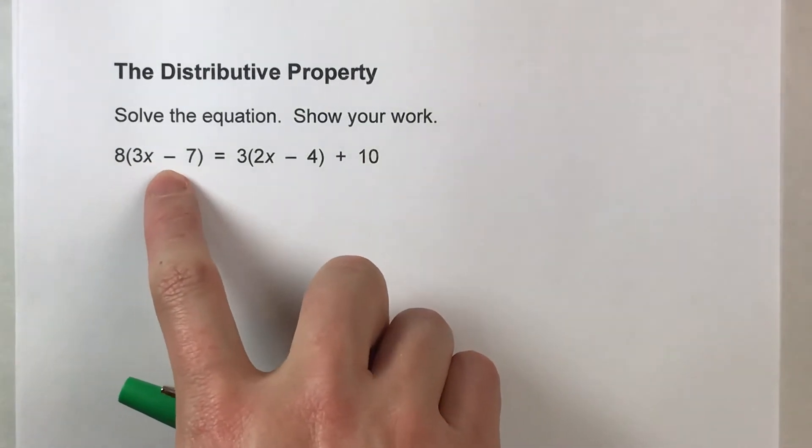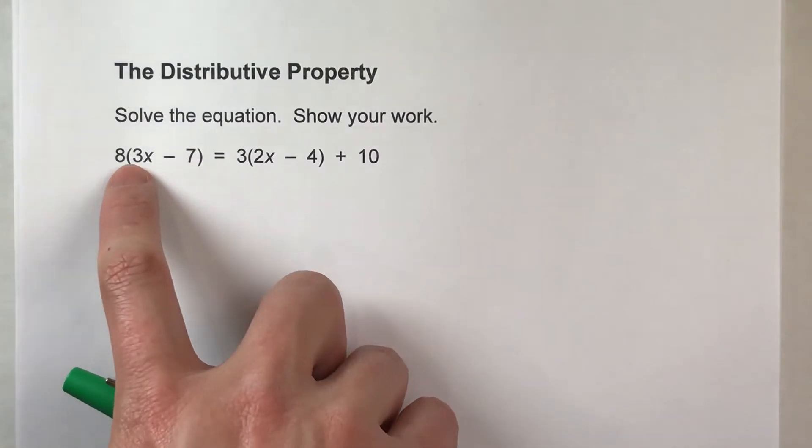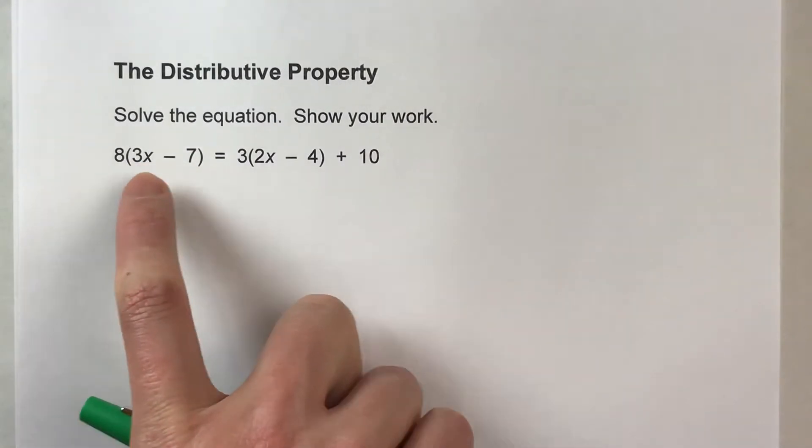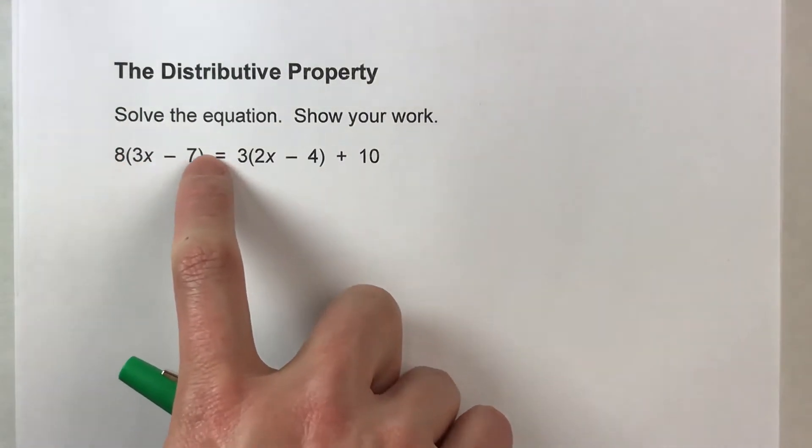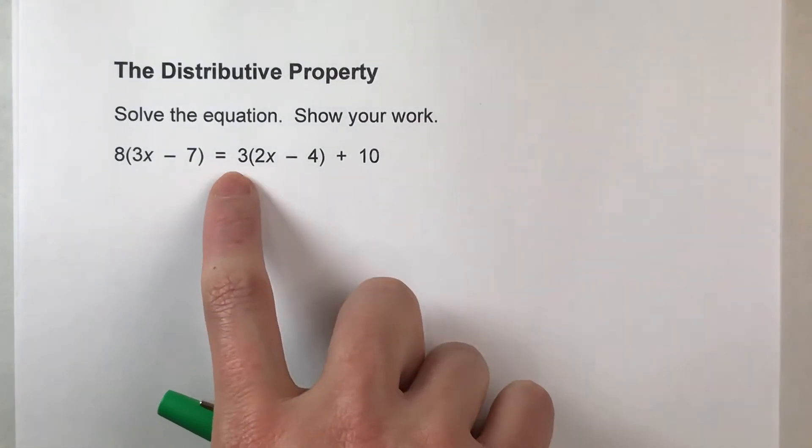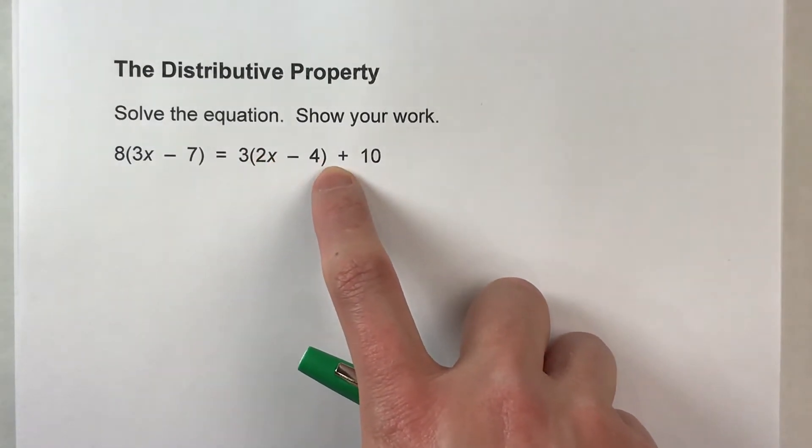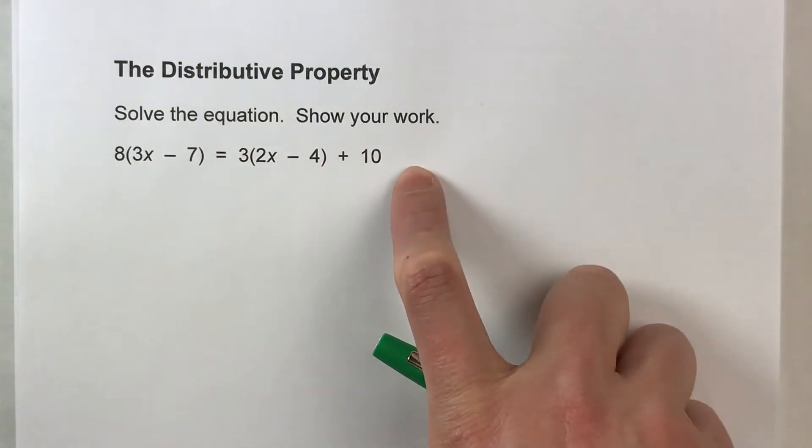8 times 3x minus 7. And notice, 8 is right next to the parentheses with all these things in parentheses. What that means is we're multiplying 8 by everything in the parentheses. And on the other side, we've got equals 3 times parentheses, 3 times 2x minus 4 plus 10.